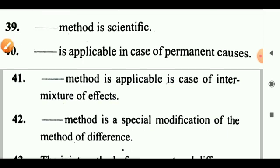Question 45: The method of residues is a method of discovery, not dash. Answer: Proof. Question 46: The method of dash is also called the statistical method. Answer: Concomitant variation. Question 47: The rise and fall of mercury in the thermometer is an example of dash experimental method. Answer: Concomitant variation.